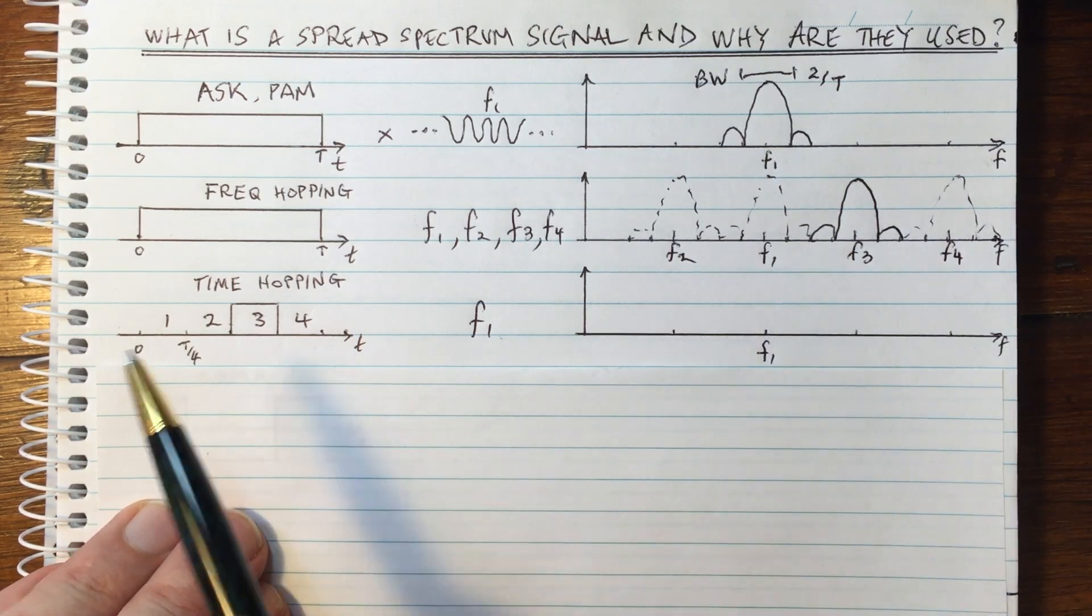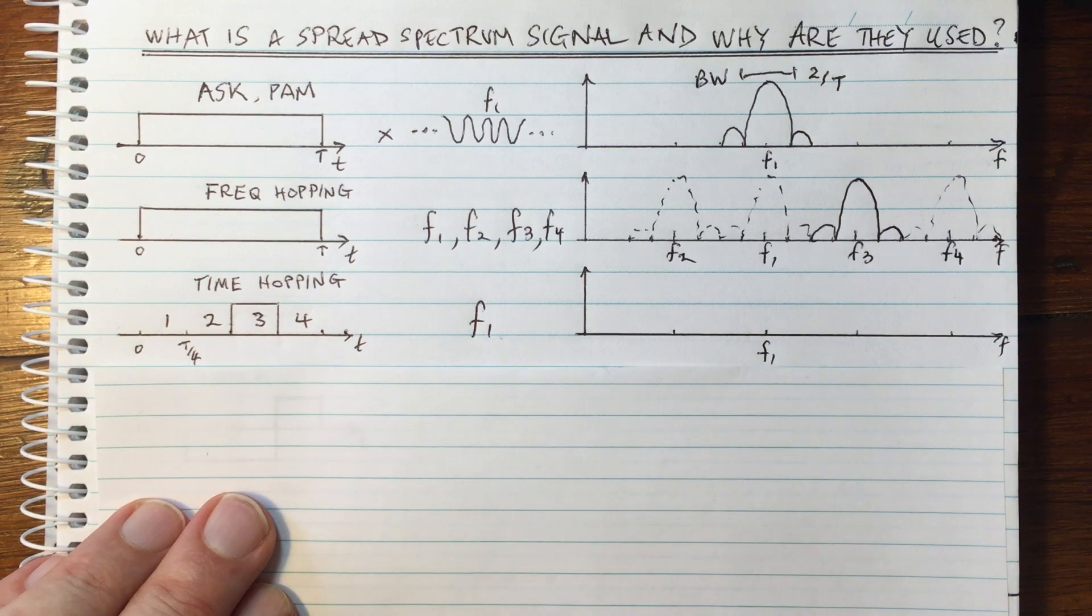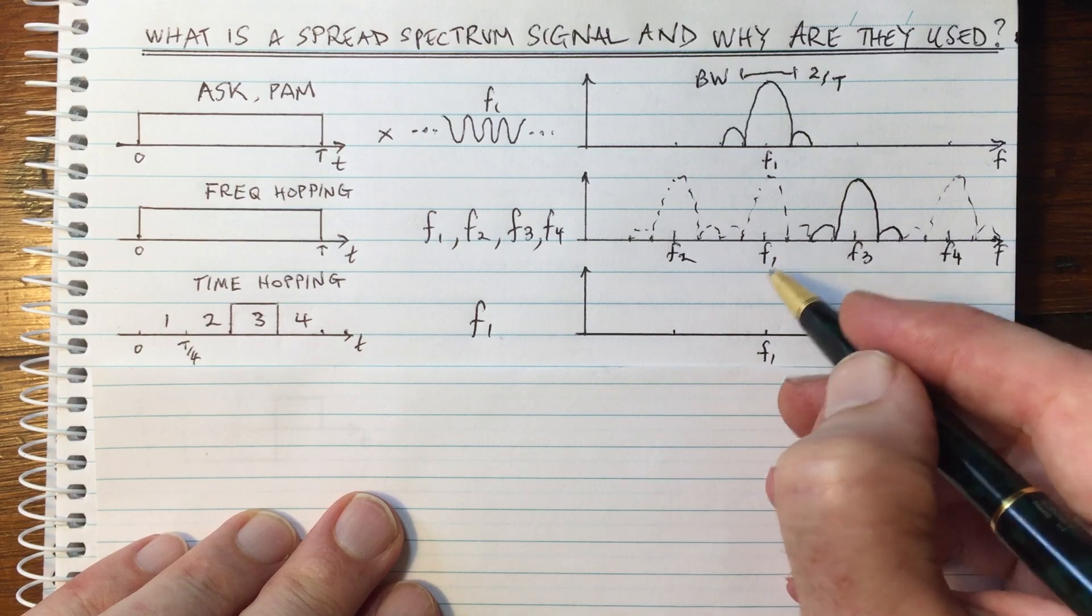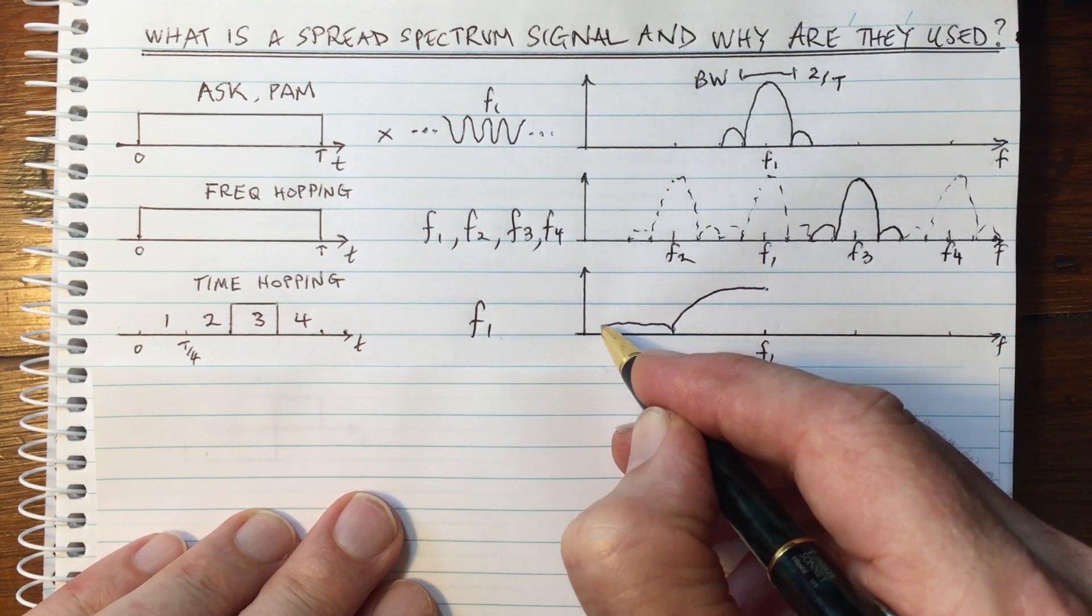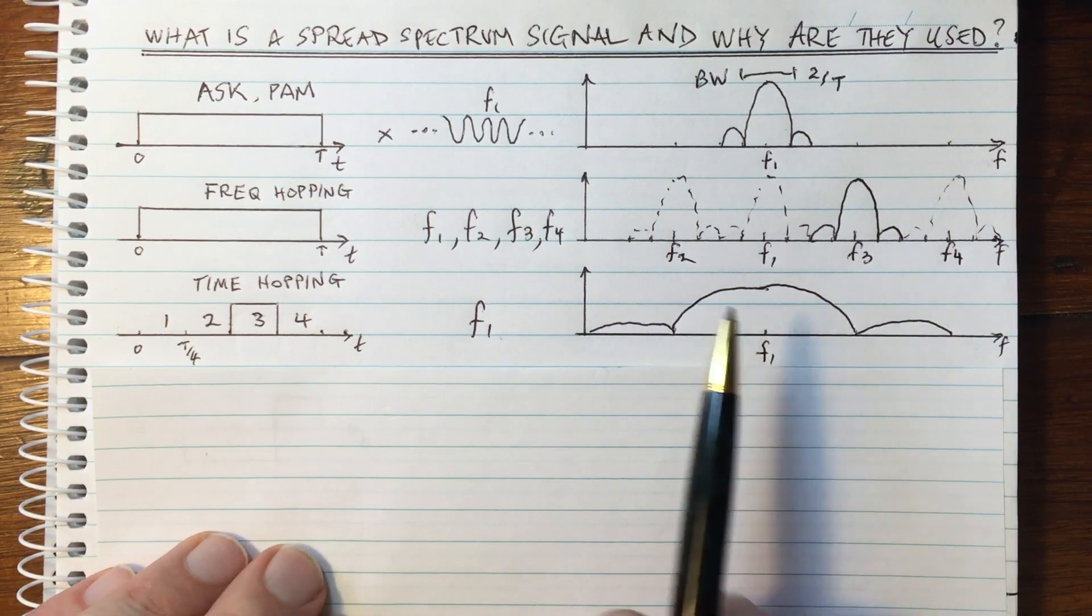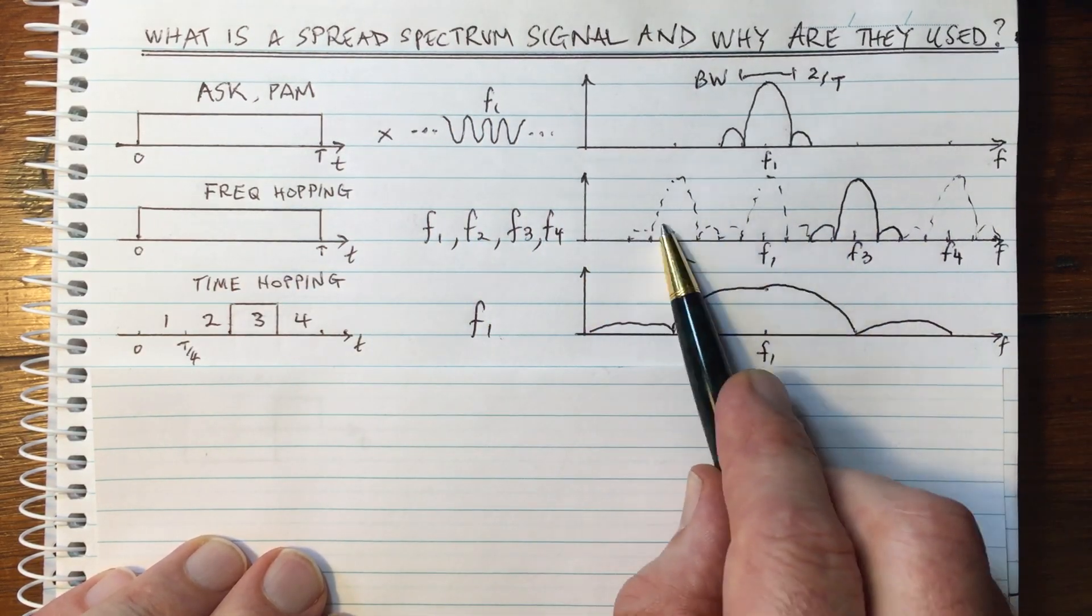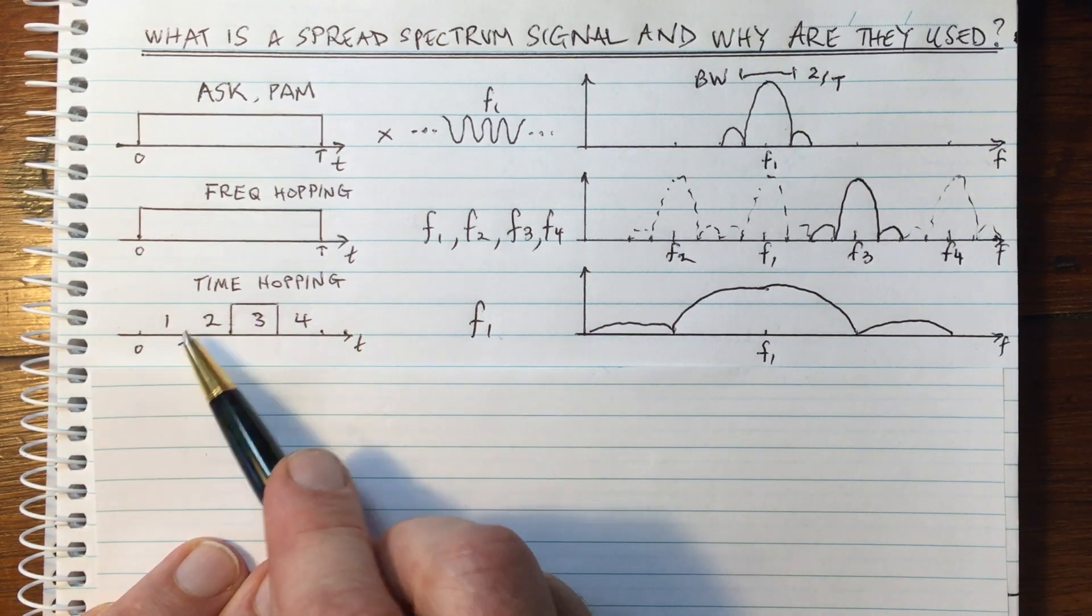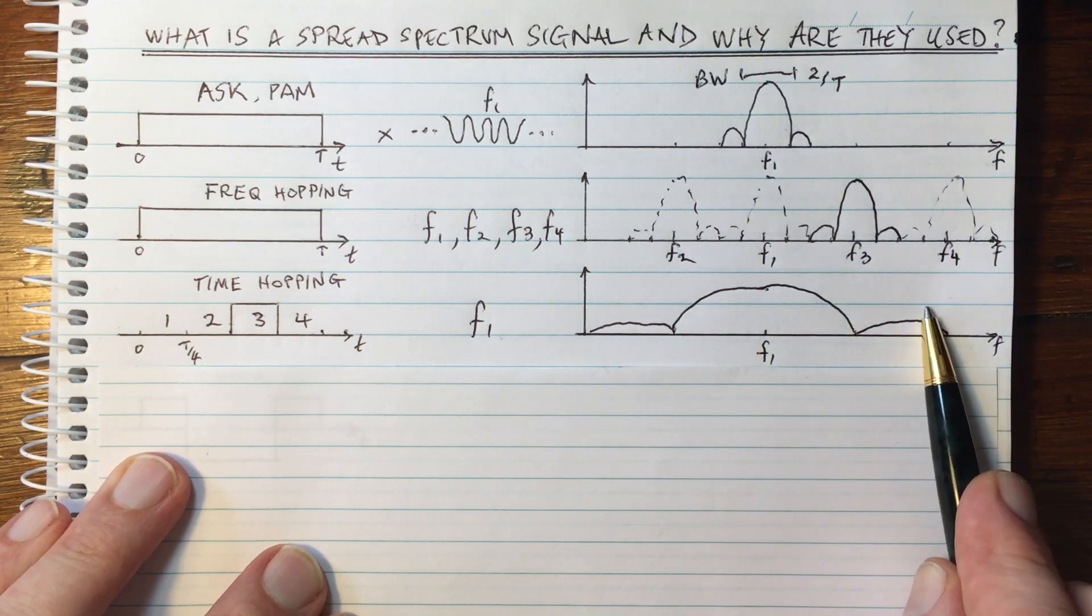What that means in the frequency domain is we are now turning our signal on and off four times as fast. And that means that in the frequency domain, we're going to be using four times the bandwidth. So now our bandwidth is going to look like this. It spreads out the sinc function. And so again, in this case, we are also spreading the spectrum. In this case here, we only use part of the spectrum at any given time. In this case here, we're only using part of the time to send. And we're remaining silent at other times. We're using all of the spectrum all the time.